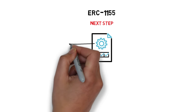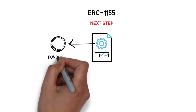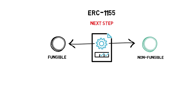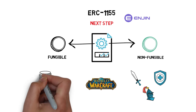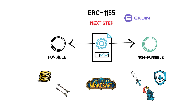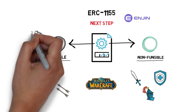ERC1155 is the next step in creating non-fungible tokens. The standard allows for creating contracts that support both fungible and non-fungible tokens, and it was created by Enjin, a project focusing on blockchain-based gaming. In many games such as World of Warcraft, a player can hold both non-fungible items — swords, shields, armors — and fungible items such as gold or arrows. This standard allows developers to define both fungible and non-fungible tokens and decide how many of these tokens should exist.